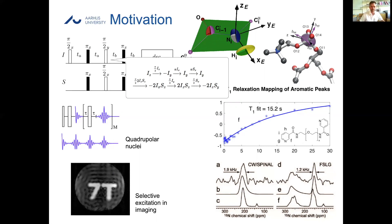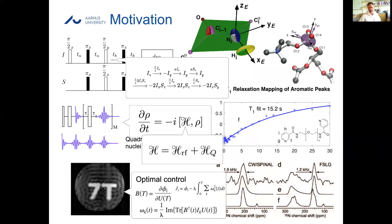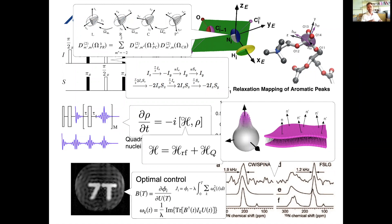For pulse sequences, a relatively simple task, you can use product operators developed back in the 1980s. For quadrupole nuclei, the Hamiltonian doesn't commute with itself, so you need more elaborate calculations. For pattern-selective excitations you typically use optimal control. For orientation effects, we needed to include mosaic spread. And for rotating samples you have to keep track of all the coordinate transformations required for the correct analysis.